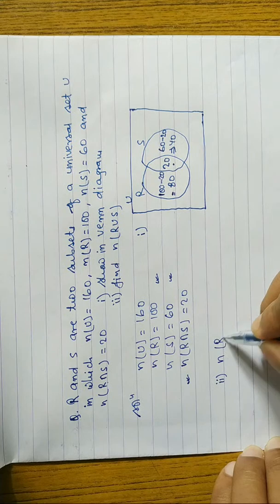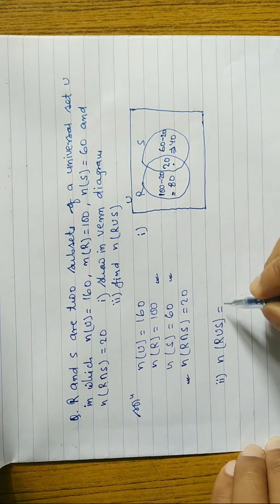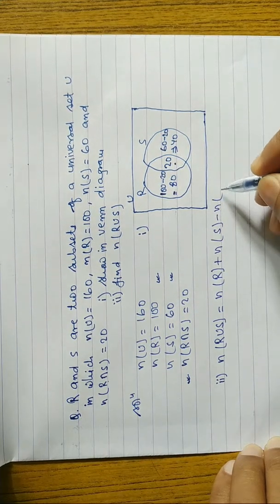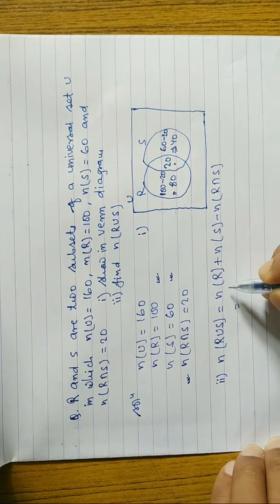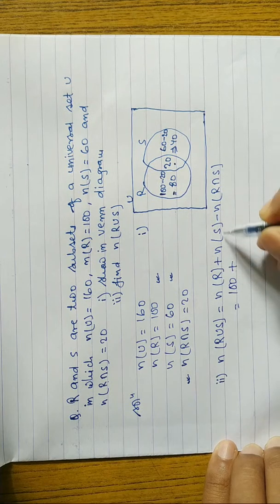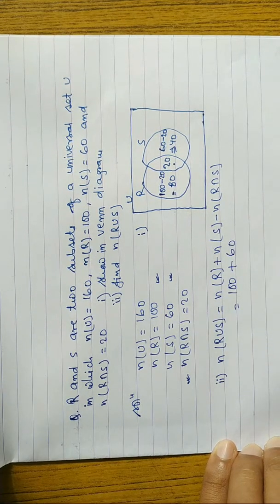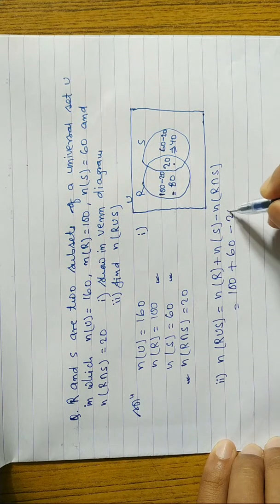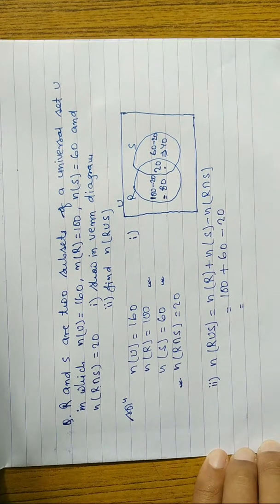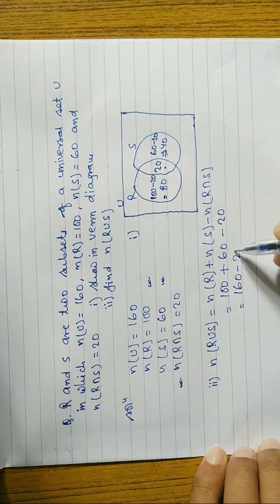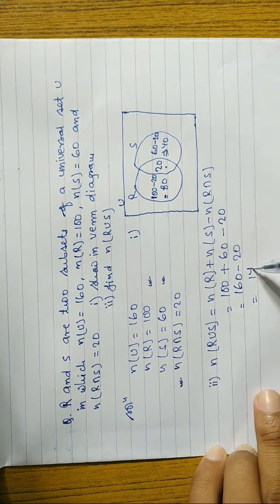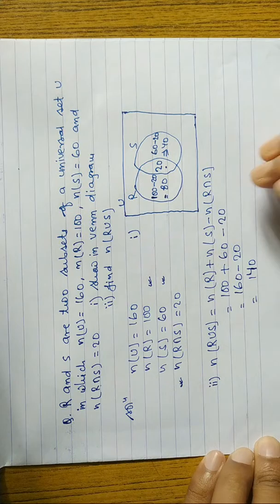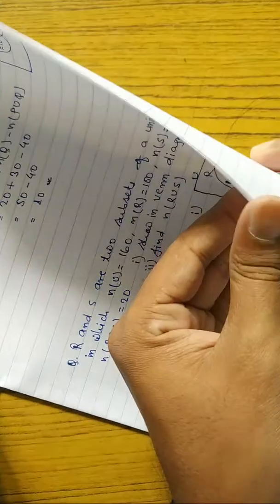In number two, we have to find out n(R∪S). What is the formula? n(R) + n(S) − n(R∩S). n(R) is 100, n(S) is 60, and n(R∩S) is 20. When we add 100 plus 60 we get 160, minus 20 gives us 140. So the value of n(R∪S) is equal to 140.